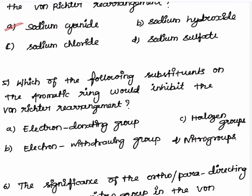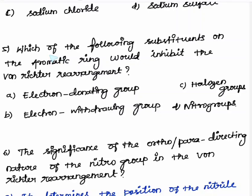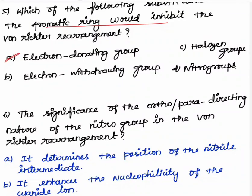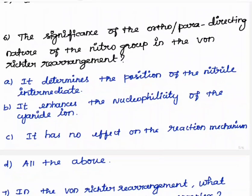Fifth question: which substitution on the aromatic ring would inhibit Von Richter rearrangement? Electron donating groups would inhibit the reaction — if an electron donating group is present, the reaction does not proceed. The significance of the ortho-para directing nature of the nitro group in Von Richter rearrangement is that it determines the position of the nitrile intermediate. This is the right answer.